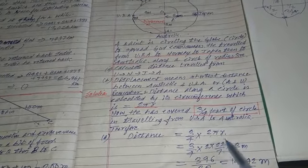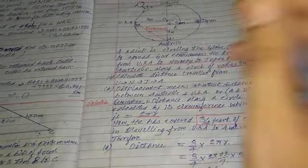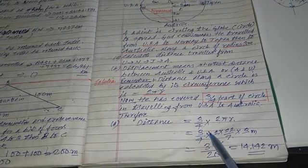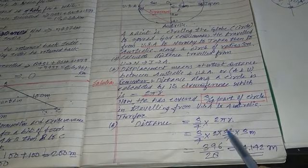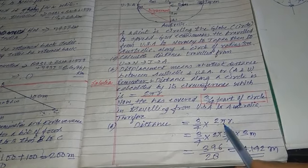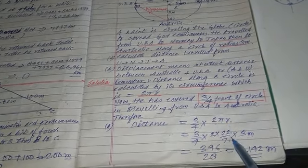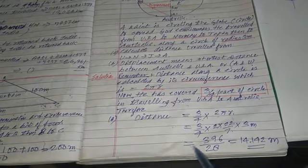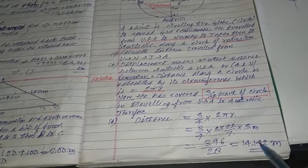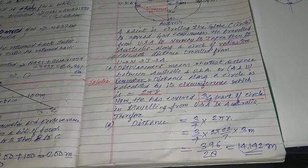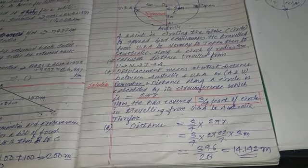The value of π is 22/7 and radius is 3 meters. So distance equals 3/4 into 2 into 22/7 into 3. When you multiply this out, the value comes out to be 14.142 meters. Now let's see the next part.